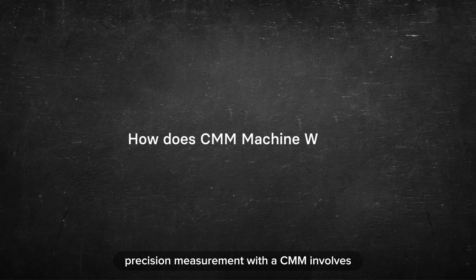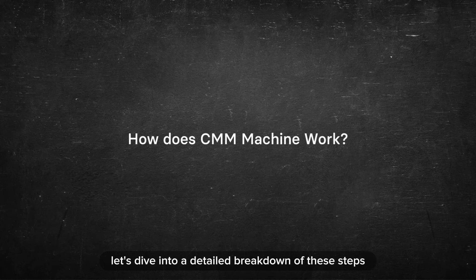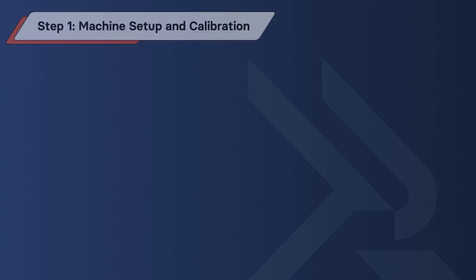Precision measurement with a CMM involves several critical steps. Let's dive into a detailed breakdown of these steps. Step 1 is machine setup and calibration.